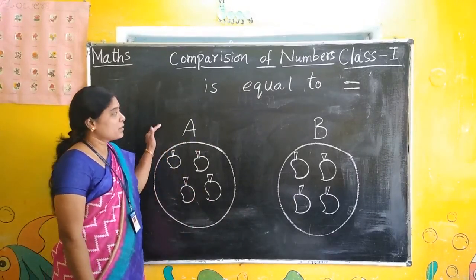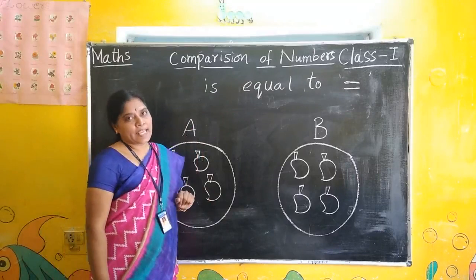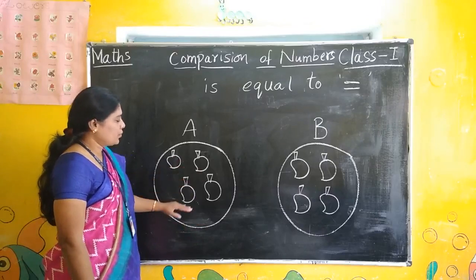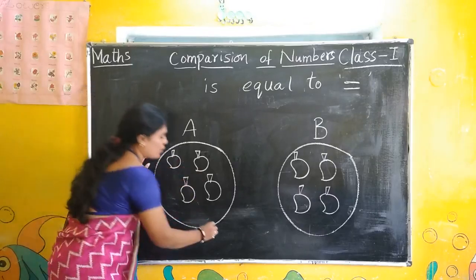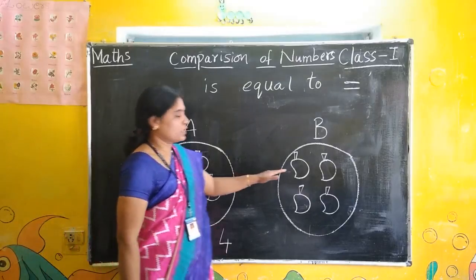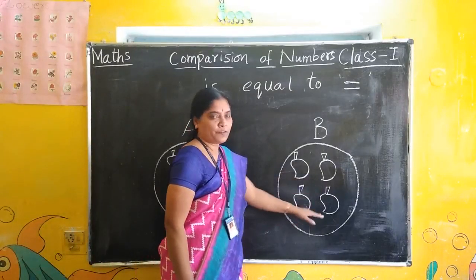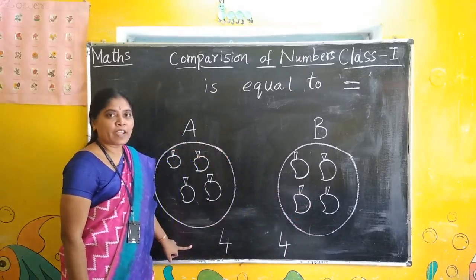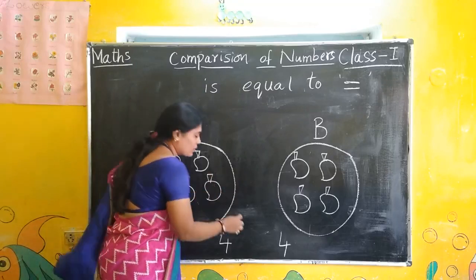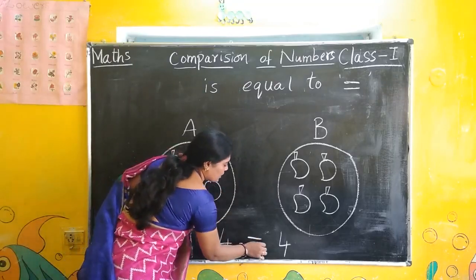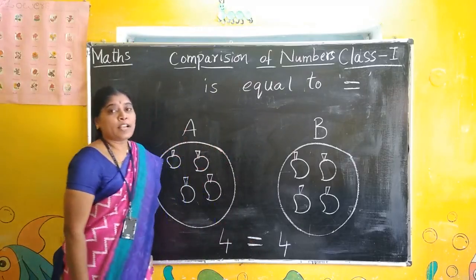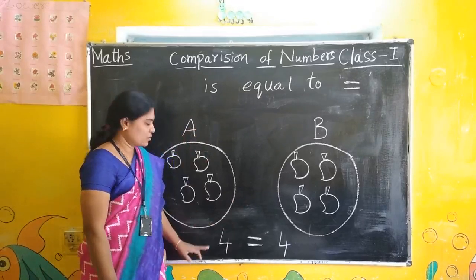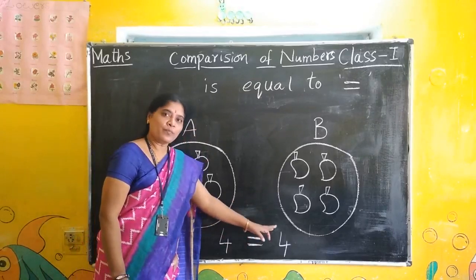Now look at this. We are learning now is equal to. Count and write the number here: 1, 2, 3, 4. 4 mangoes. Here also count it: 1, 2, 3, 4. 4 mangoes. Same. So what is the symbol we have to write? Equal — same. So is equal to. This is the symbol of is equal to. That is is equal to. So 4 is equal to 4.